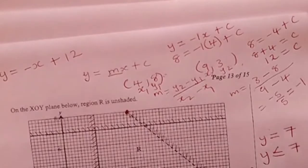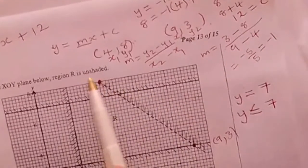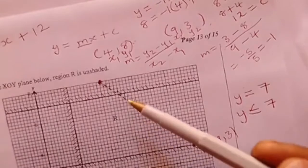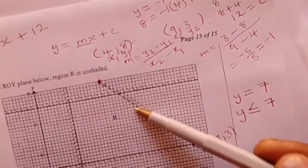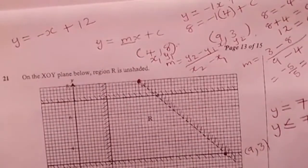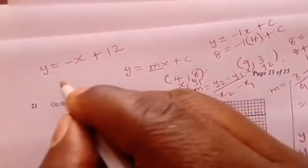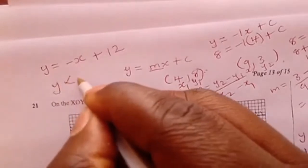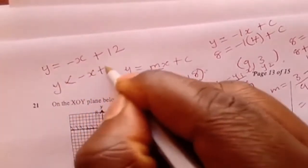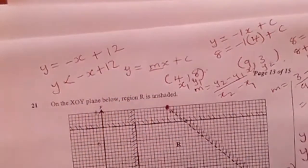We are now left with the inequality. The inequality sign is determined by the position of R. If we look at this dotted line, R is below this line. Hence, we are going to use the lesser sign. This time around, we use the lesser sign without 'or equal to' because this is a broken line. So y is less than minus x plus 12, which is the fourth inequality.